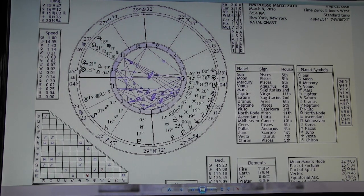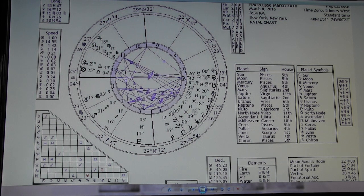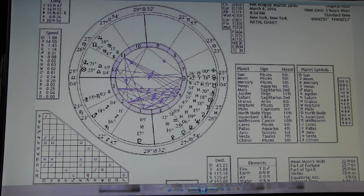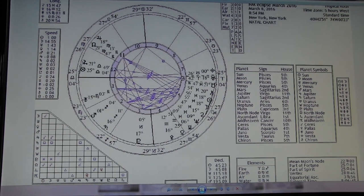Look at all this Pisces energy here. We've got Mercury, Neptune which is the ruler of Pisces, Ceres, Moon, Sun, Chiron, South Node. So we're deep in it. We're in the deep water here with the Pisces energy for sure.